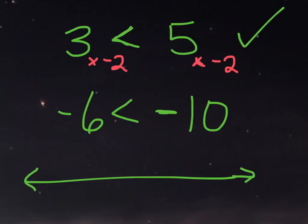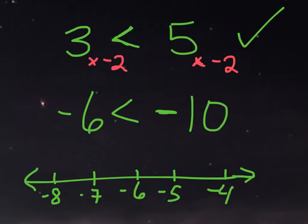If you remember, when we were practicing the rational numbers unit, when you're dealing with negative numbers, the smaller that negative digit is, the bigger it actually is, because it's closer to 0. For example, negative 4 is actually bigger than negative 5, because it's closer to 0 — it's less negative. So negative 6 is actually greater than negative 10, which means the statement as written is not true.